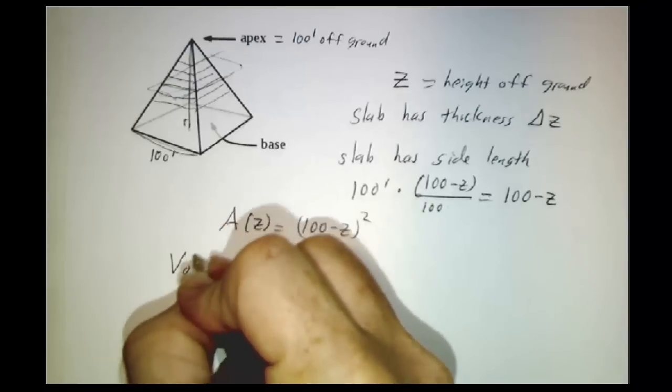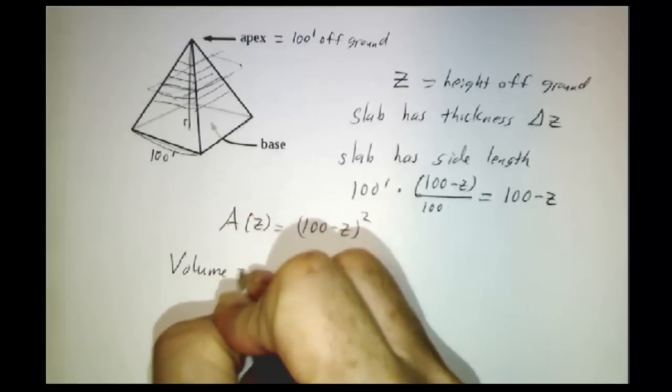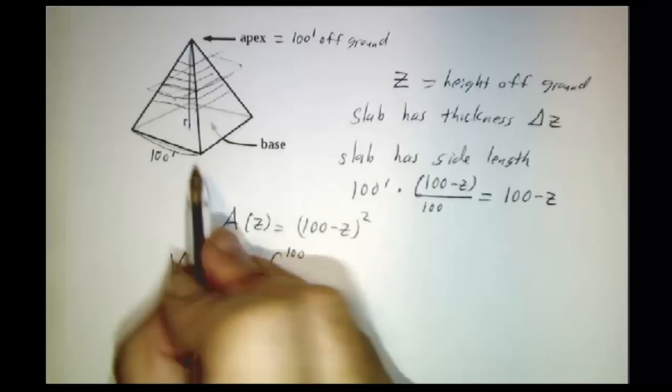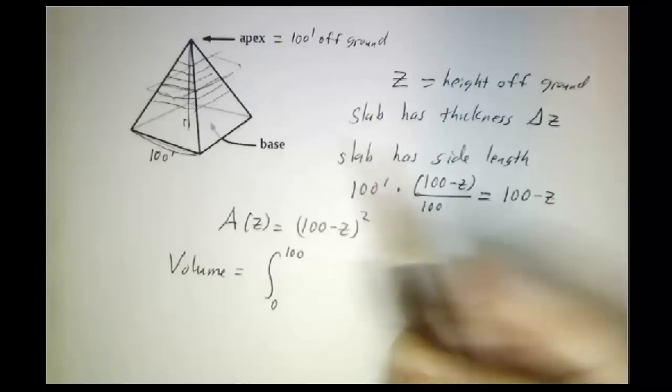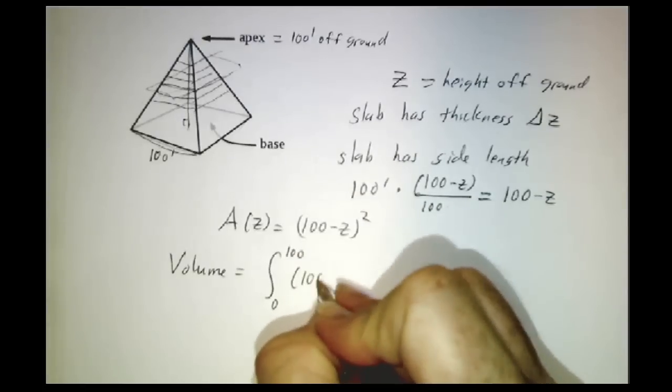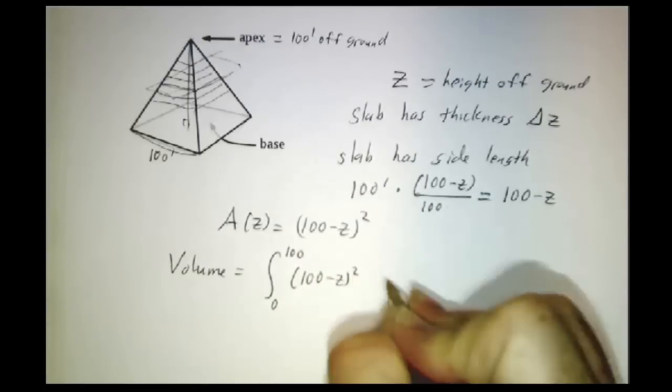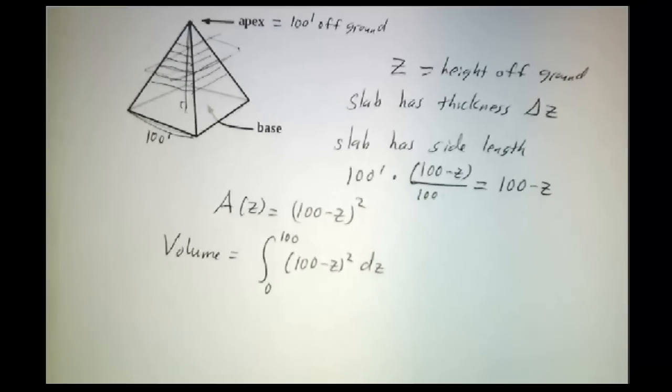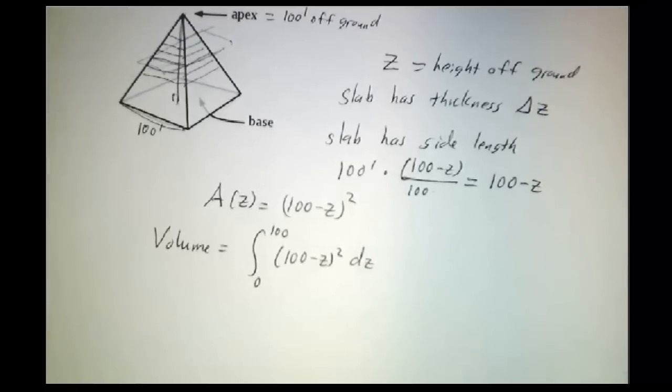So that makes our area 100 minus z squared. And our volume is going to be the integral from 0 to 100, so from z equals 0 to z equals 100 of 100 minus z squared dz. So how do we do this integral? Well, this is a perfect case for using u substitution.